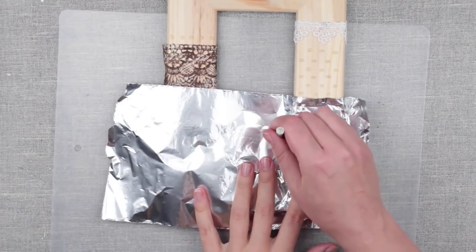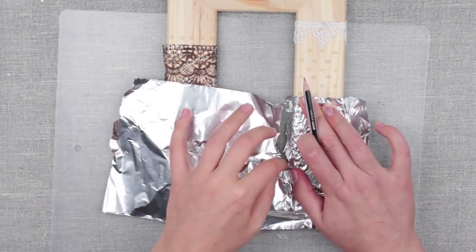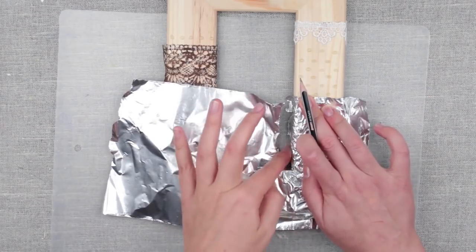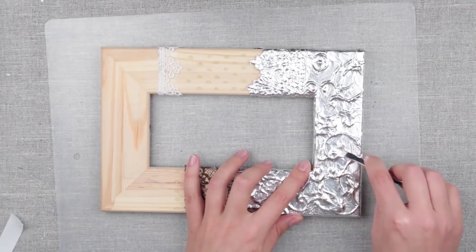Cut the foil with a pencil and fold across the inner side of the frame to continue the job. Continue defining the ornament with a dull, flat, spatula-shaped tool.